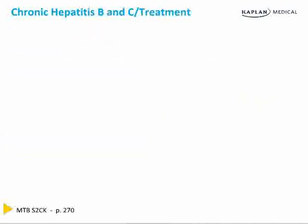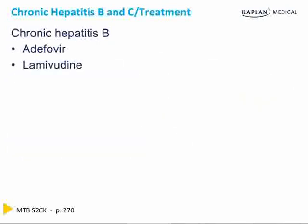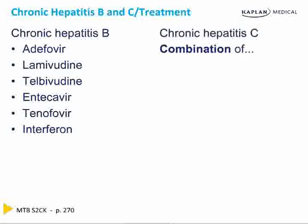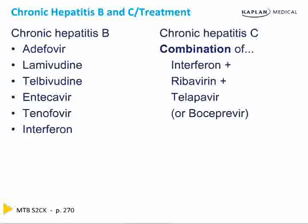Treatment of hepatitis B uses antivirals such as adefovir, lamivudine, telbivudine, entecavir, tenofovir, or interferon. Treatment of chronic hep C is a combination of interferon, ribavirin, and a protease inhibitor such as telaprevir or boceprevir.